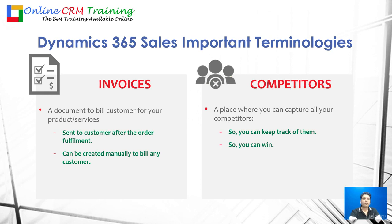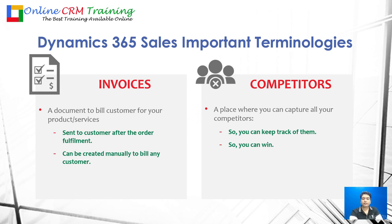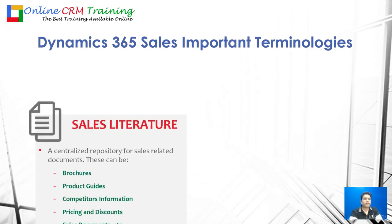Then you have competitors. This is a place where you capture all your competitor details. When you are bidding for a project and another company is also bidding, you should know what they are good at, what they are bad at, their strengths, weaknesses, product offerings, and quality. You can capture this information in competitors and attach it to your sales process. Knowing a competitor's weaknesses allows you to adjust your offering and win the deal.